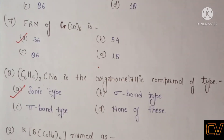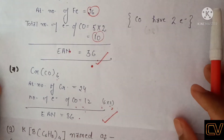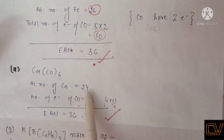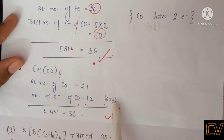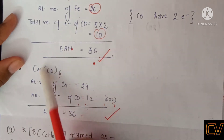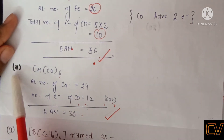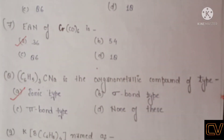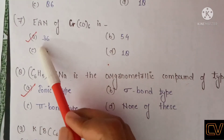The next question is: what is the effective atomic number of Cr(CO)6? Chromium's atomic number is 24. CO has 2 electrons per ligand. There are 6 carbonyl molecules, so 6 × 2 = 12. After adding 24 + 12, we find 36. The effective atomic number of this organometallic compound is 36. The correct answer for question 7 is option A, which is 36. I hope the concept is clear to you. If you have any query, feel free to ask in the comment section.